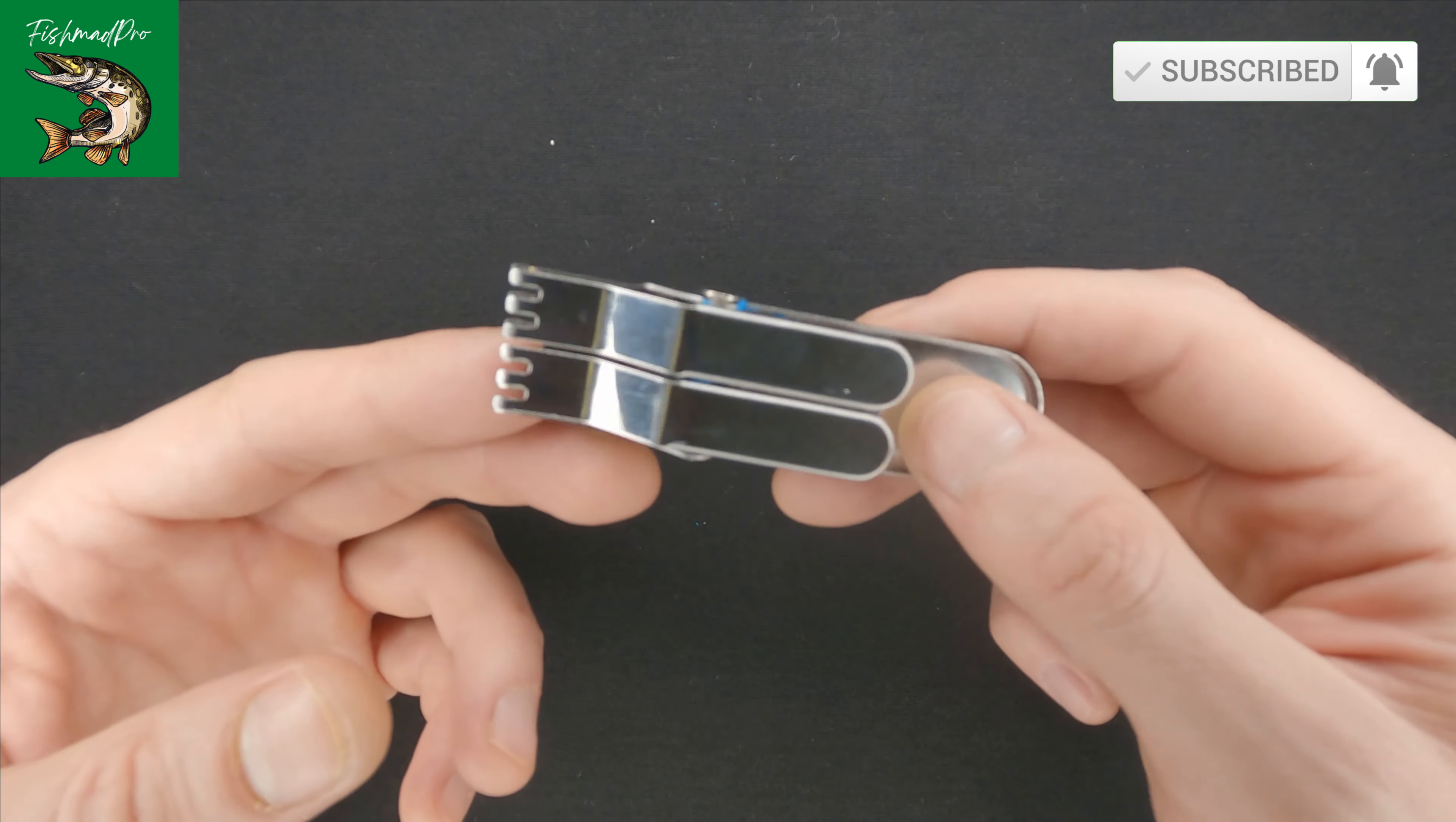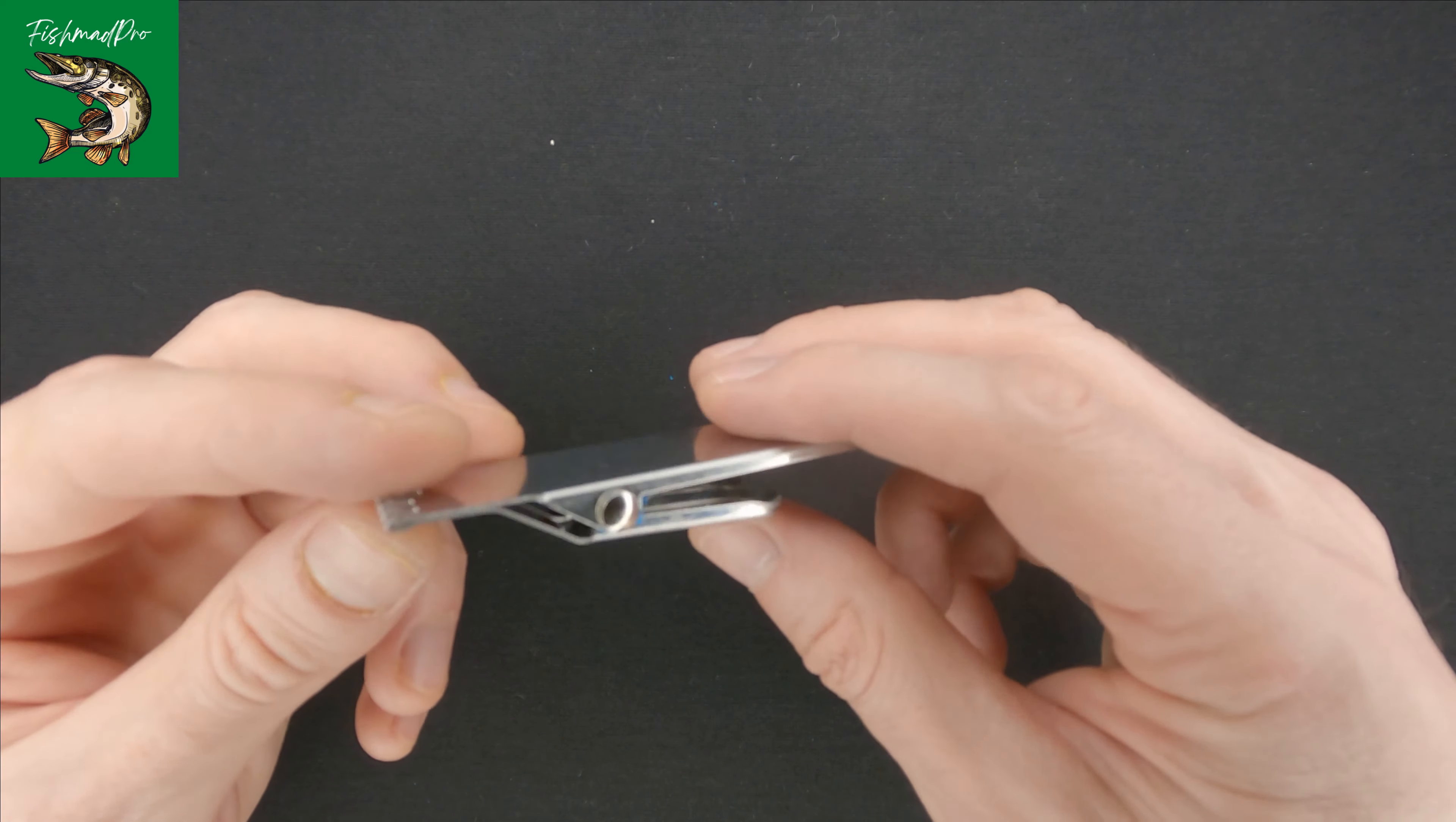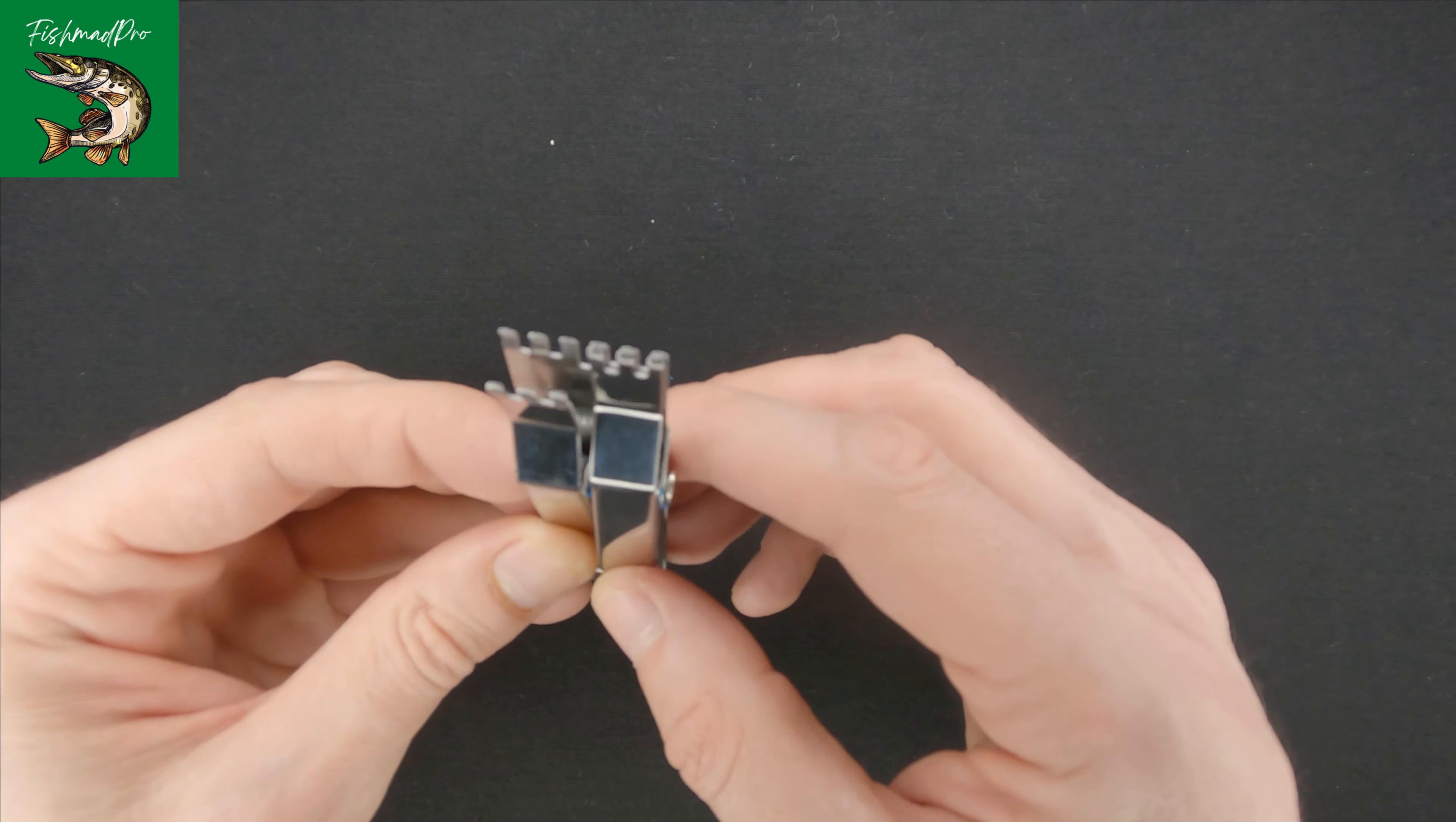I'm definitely going to be using this gadget because I love float fishing and I use worms and leeches. This gadget is specially designed to help you put the worm, leech, or whatever live bait you're using on a hook. How does it work? It has these two clips.